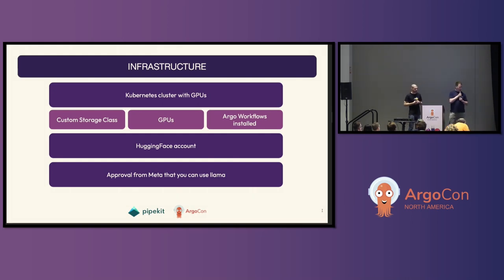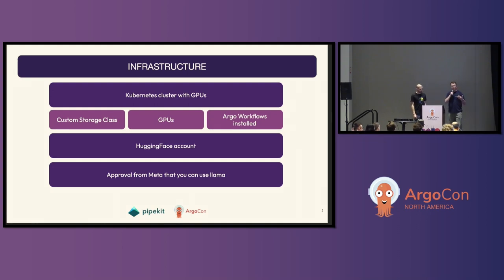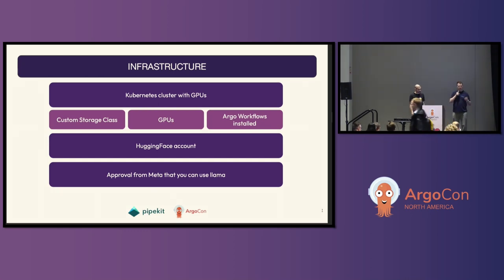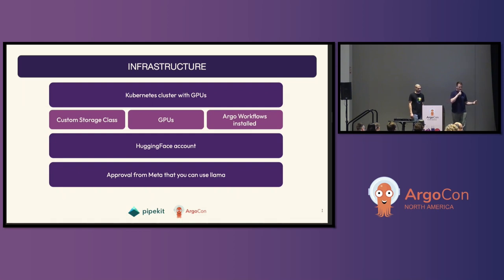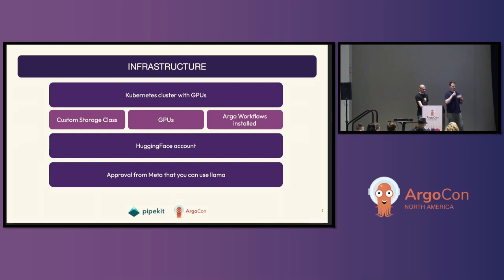Given this is ArgoCon and KubeCon, we will need a Kubernetes cluster — that one is a given. We'll need some GPUs for the actual model training. Within the cluster, we need principally three things: a custom storage class, GPUs, and Argo Workflows installed as the workflow orchestration system. Outside the cluster, we need a HuggingFace account and approval from Meta to use Llama. If you're using another LLM, you might not necessarily need that.